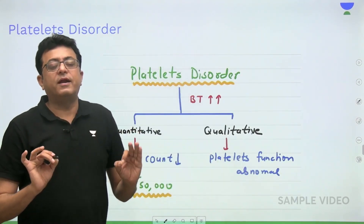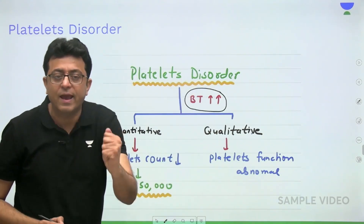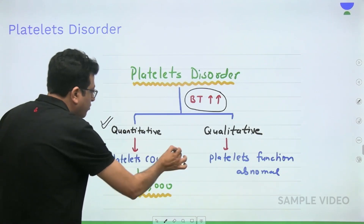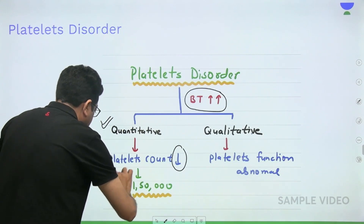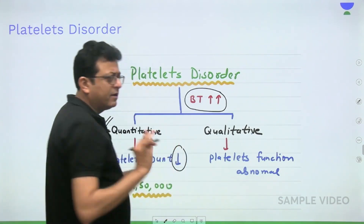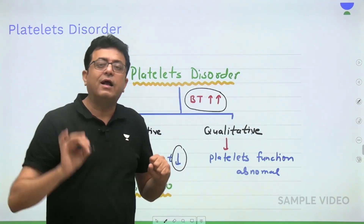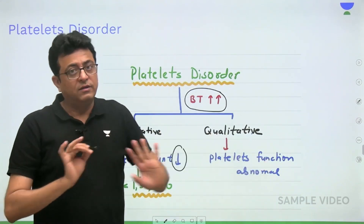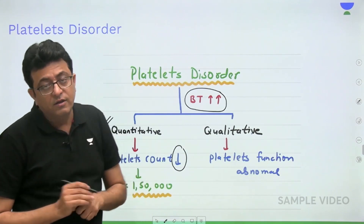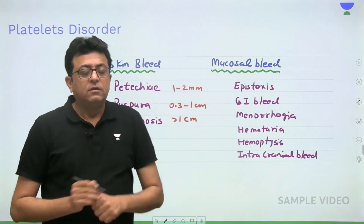In platelet disorder, the first test to perform is bleeding time — it will be prolonged. Platelet disorder is of two types: quantitative, where platelet count is decreased (less than 1.5 lakh), and qualitative, where platelet number is normal but platelet function is abnormal — there may be a problem in adhesion, activation, or aggregation.